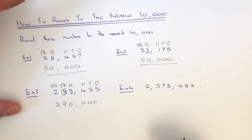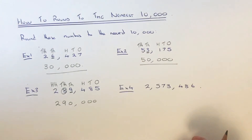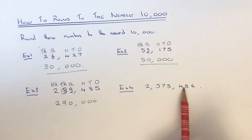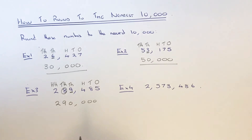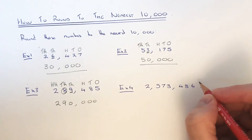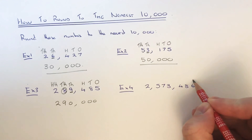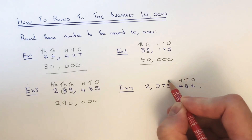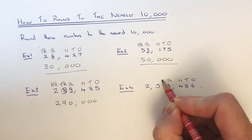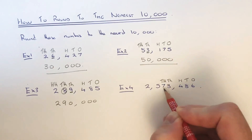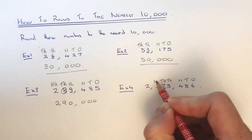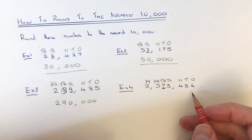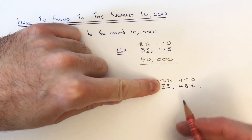Our answer is two hundred and ninety thousand. Let's move on to example four. This time we've got round 2,573,486 to the nearest ten thousand. Again, we identify the tens of thousands column starting from the right: ones, tens, hundreds, thousands, tens of thousands — that's the column we're interested in — then hundreds of thousands, and then millions. We can ignore the millions and the hundreds of thousands.